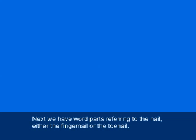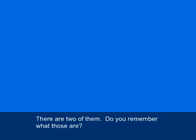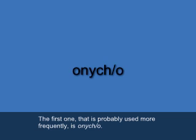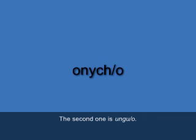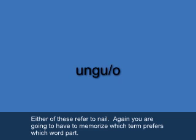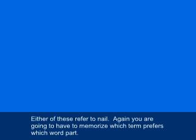Next, we have word parts referring to the nail — either the fingernail or the toenail. There are two of them. The first, probably used more frequently, is ONYCHO — O-N-Y-C-H slash O. The second is UNGU/O — U-N-G-U slash O. Either of these refer to nail. Most frequently, ONYCHO is the one that's used.